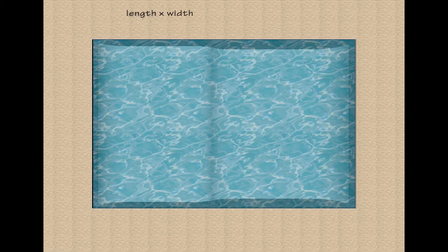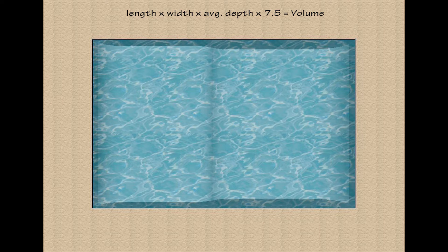First, we'll look at a square or rectangular pool. When you have this kind of pool, you can take the length, the width, the average depth, and then the number 7.5 and multiply them all together and it'll tell you how much water there is in the pool. This works because the length times the width times the average depth in feet will give you the cubic feet volume of the pool, and then multiplying that by 7.5 — which is about how many gallons of water will fit in one cubic foot — gives you how much water will fit in that pool.